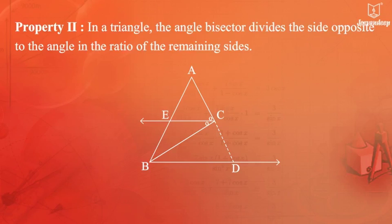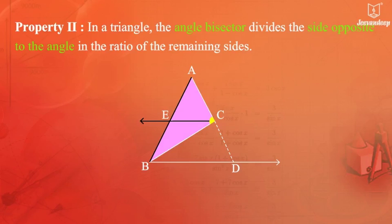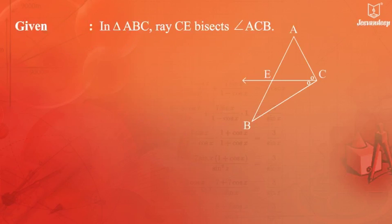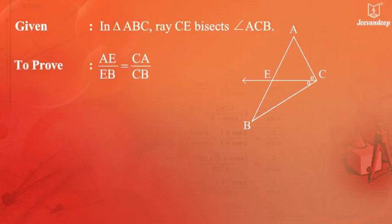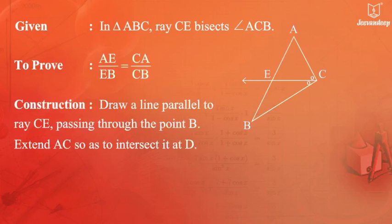Second property: In a triangle, the angle bisector divides the side opposite to the angle in the ratio of the remaining sides. Given: In triangle ABC, ray CE bisects angle ACB. To prove: AE upon EB is equal to CA upon CB. Construction: Draw a line parallel to ray CE passing through point B, and extend AC to intersect it at D.